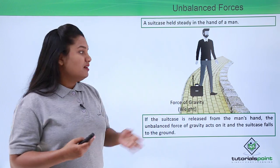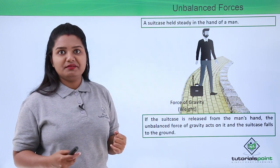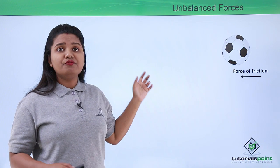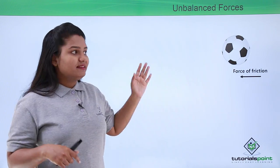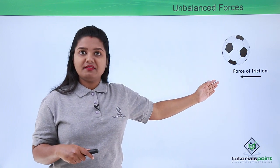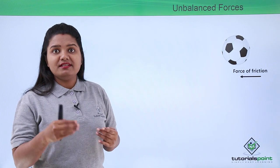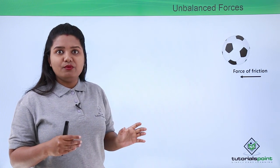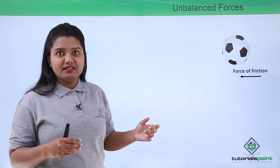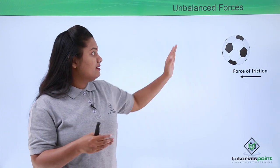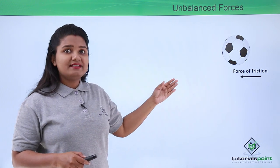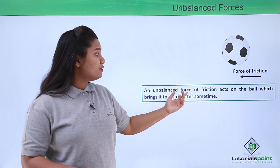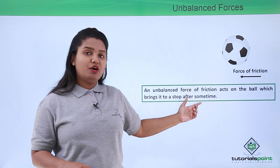Another example is a rolling football, which comes to a stop after some time rather than rolling forever. This is because the force of friction constantly acts on the moving body. When no additional force is applied, friction takes over and the body stops. The force of friction acts against the motion of the ball, and an unbalanced force of friction acts on the ball which brings it to a stop after some time.